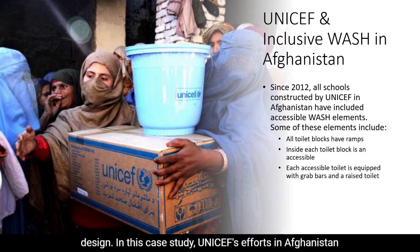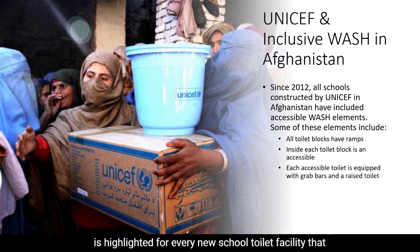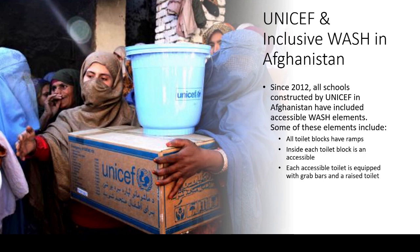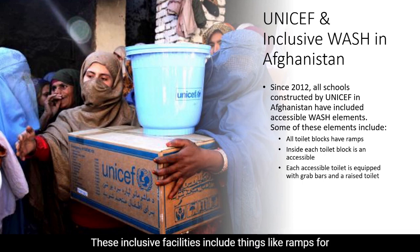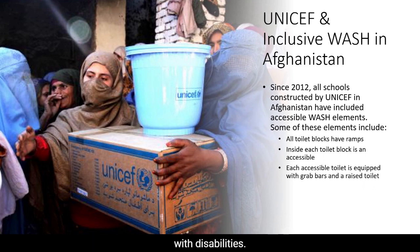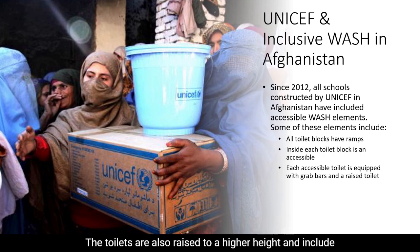In this case study, UNICEF's efforts in Afghanistan are highlighted. For every new school toilet facility supported by UNICEF since 2012, the facility has been constructed to be accessible to children with disabilities. These inclusive facilities include ramps for each toilet block and cubicles accessible for children with disabilities. The toilets are also raised to a higher height and include grab rails surrounding the toilet for safety and to assist with mobility.